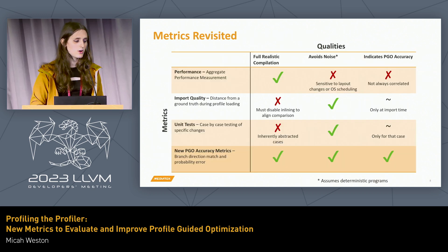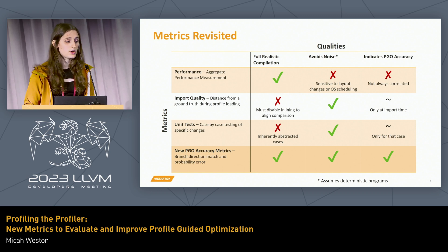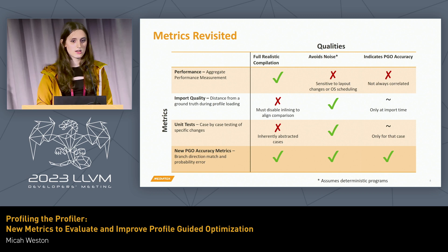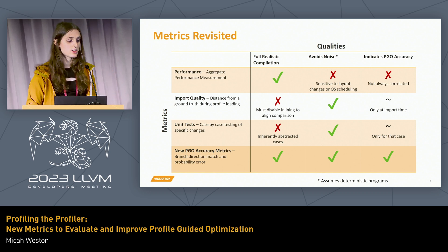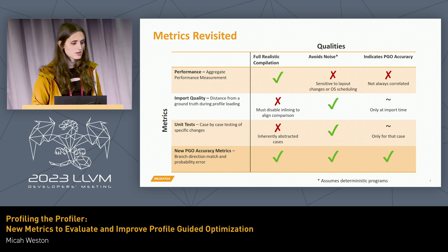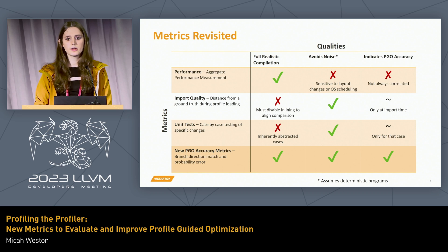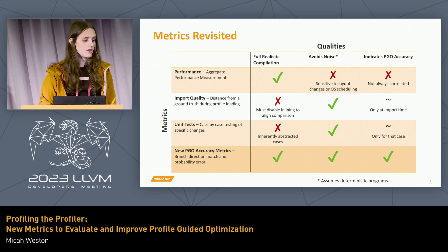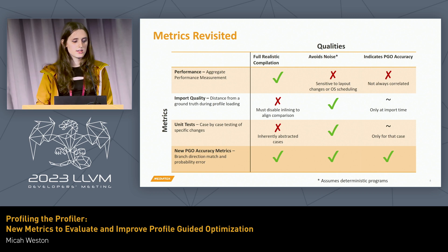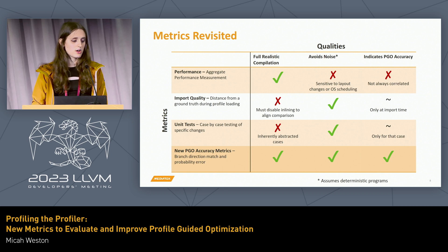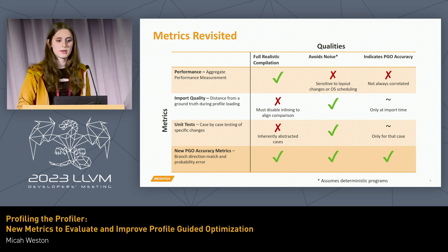So where do these metrics fit in? One benefit is we support full realistic compilations — this allows us to compile things needing only an extra backend flag, so we can compare any sorts of inlining flags. We've also tested with various levels of optimizations. It also avoids the noise you might get from performance metrics, as it's only relying on deterministic execution. Finally, it gives an indication of branch accuracy and PGO accuracy at the end of compilation, helping catch errors that might happen later in the pipeline.